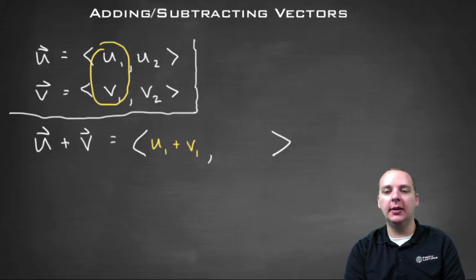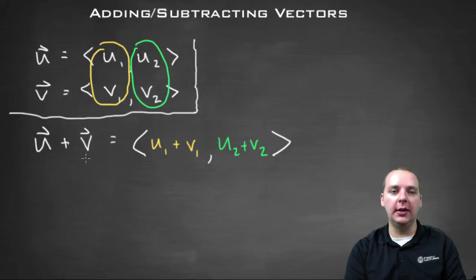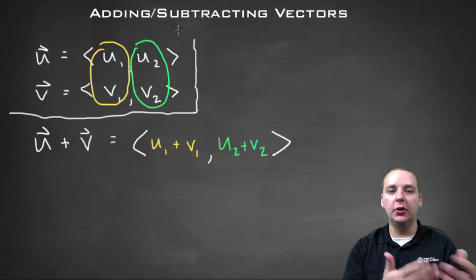And then we'll take the second components and add them, u2 plus v2, and then that will be your second component in the sum. And then I'm not going to write down the subtraction one, but it's the same thing. You would just subtract u1 minus v1 and u2 minus v2. So it's pretty straightforward.